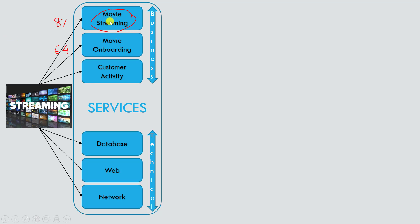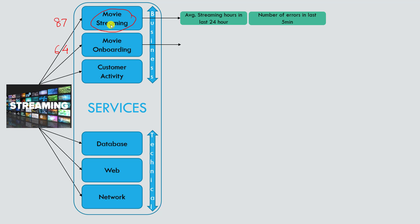For the movie streaming service, what could our KPIs be? One KPI could be the average streaming hours in the last 24 hours, because if that drops drastically it could indicate the service was down or fewer users logged in. Another KPI could be the number of errors in the last five minutes while streaming. If there's an error, we get alerted right away — we can create alerts from KPIs and fix issues before more users are affected.